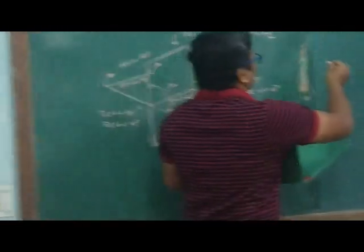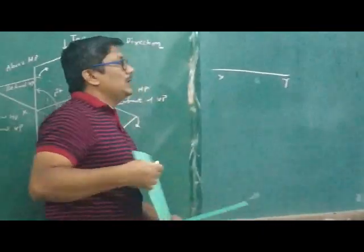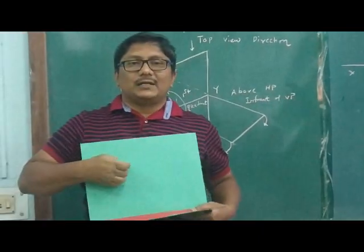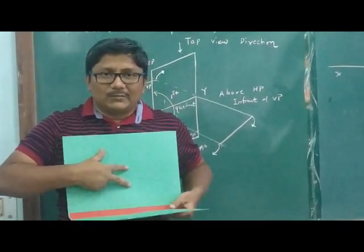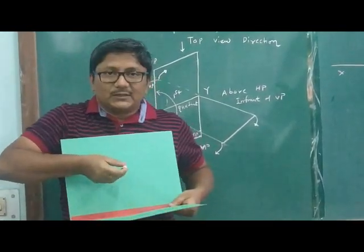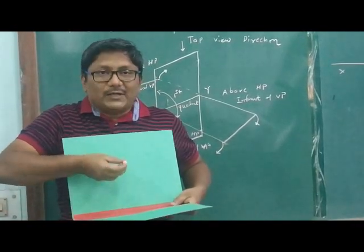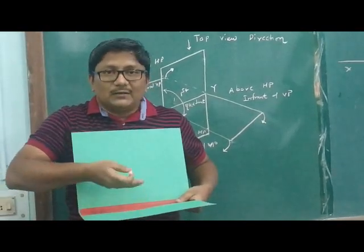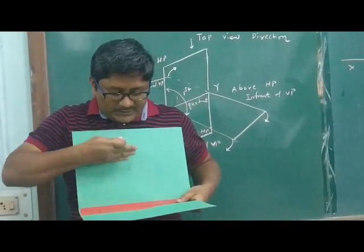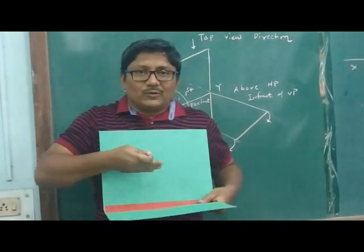So, first I will draw here a reference line, reference line where vertical plane and horizontal plane meet. Now, you see that this is the object. You can say this object is 20mm above HP, above horizontal plane, and this object is 20mm in front of VP. Now, while drawing on the two planes, we are functioning here only two planes.